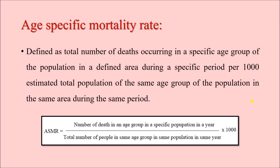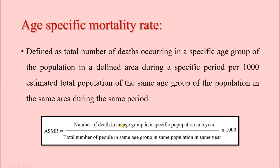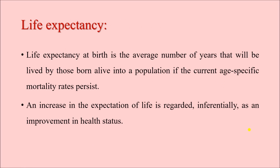The next one is the age-specific mortality rate (ASMR). As the name suggests, it tells us about mortality in a particular age group. It is defined as the total number of deaths occurring in a specific age group in a defined area during a specified period, per 1000 estimated population of the same age group. The formula is: number of deaths in a given age group in a year, divided by the total number of people in the same age group in the same population in the same year, multiplied by 1000.